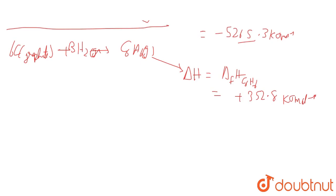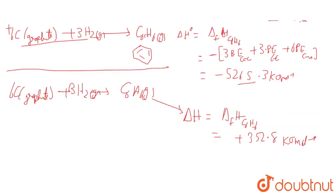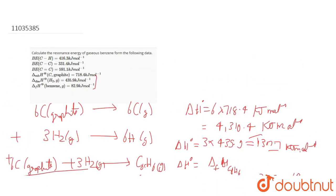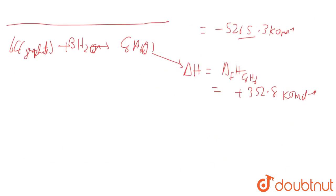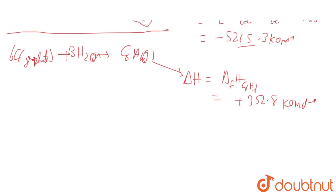So we have found the theoretical heat of formation of C₆H₆ to be 352.8 kJ/mol. However, according to the question, the actual heat of formation of benzene is given as 82.9 kJ/mol, whereas we have theoretically found it to be 352.8 kJ/mol.